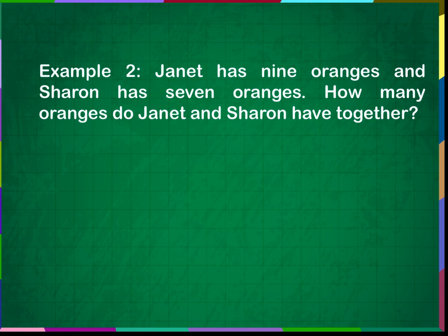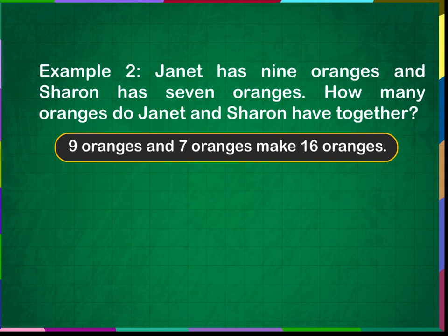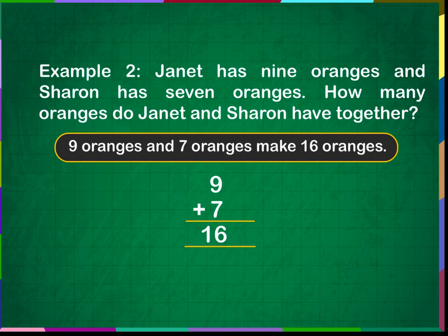Example 2: Janet has 9 oranges and Sharon has 7 oranges. How many oranges do Janet and Sharon have together? 9 oranges and 7 oranges make 16 oranges. 9 plus 7 is equal to 16. Janet and Sharon together have 16 oranges.